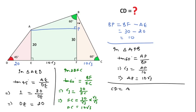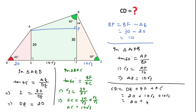Now if we add all the lengths, CD equals DE plus EF plus FC, which means 20 plus 10√3 plus 10√3. This gives 20 plus 20√3. Taking 20 common, we get 20(1 + √3). Putting in the value, we get approximately 54.64 units. This is the right answer. Thanks for watching, please like, share, and subscribe.